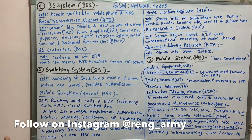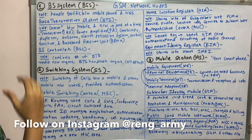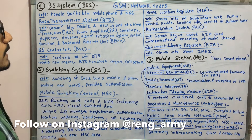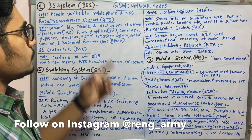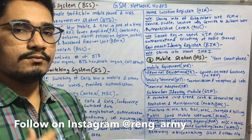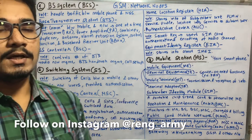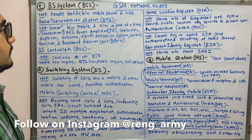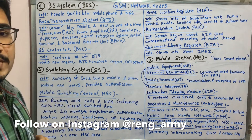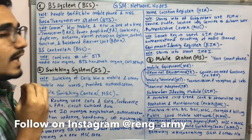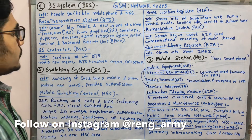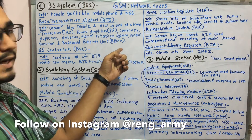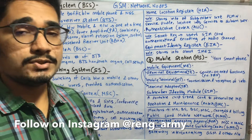The BSS has two components. The first is the Base Transceiver Station (BTS), whose role is communication between the mobile and the network. It handles one mobile user at a time, so multiple simultaneous communications are not possible. Its main components include transceiver (TRX), power amplifier (PA), combiner, duplexer, antenna, alarm extension system, control function, and baseband receiver unit (BBXS), where XS denotes the version.